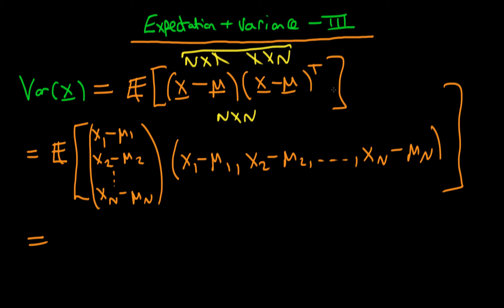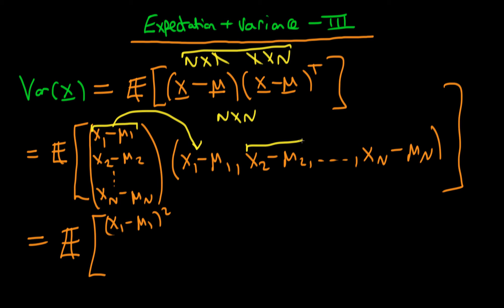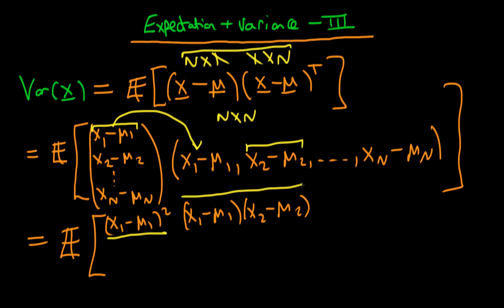Because we can think of this as ordinary matrix multiplication, we can write this as the expectation of a matrix where the first element is (x1 minus mu1) squared, the next element is (x1 minus mu1)(x2 minus mu2), and so on. When we take the expectation of this random matrix we take the expectation of each individual component: the first diagonal component yields the variance of x1, and the off-diagonal component is defined as the covariance of x1 with x2.